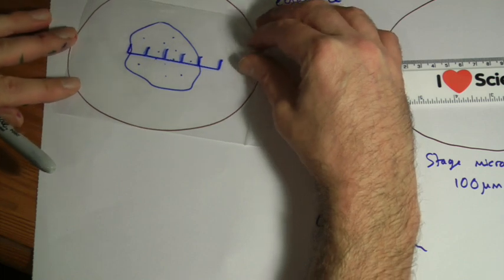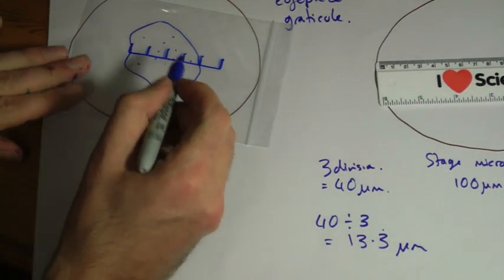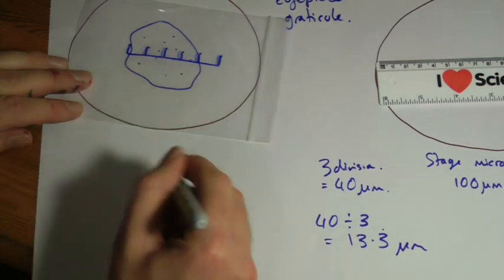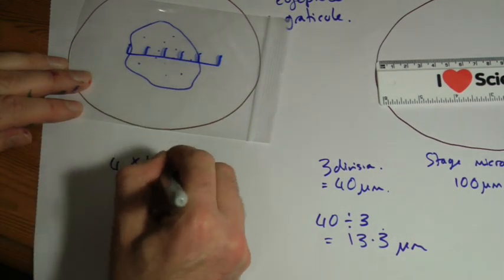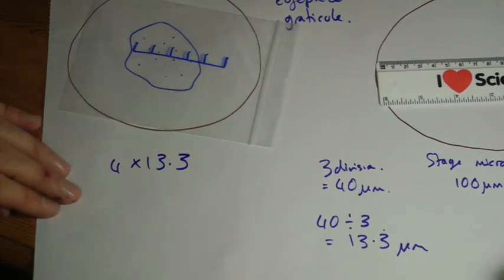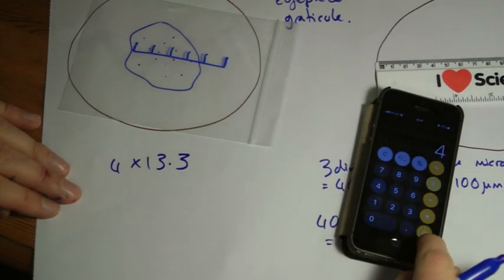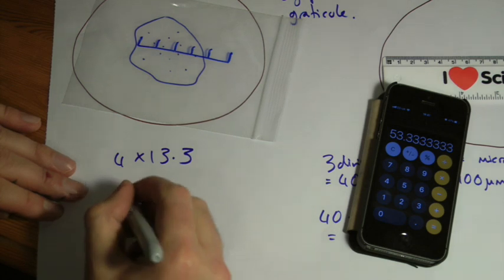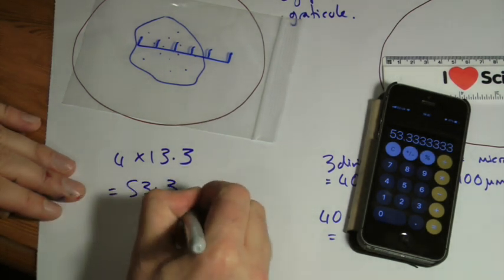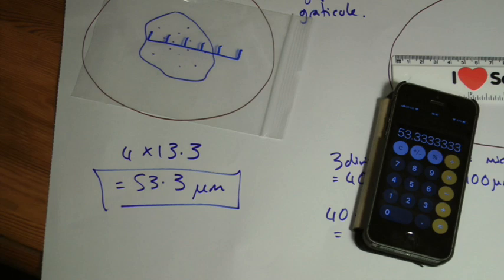All right. So let's say if I measure across here now, it's one, two, three, about four of those. So four times 13.3 equals 53.3 micrometers across would be my answer.